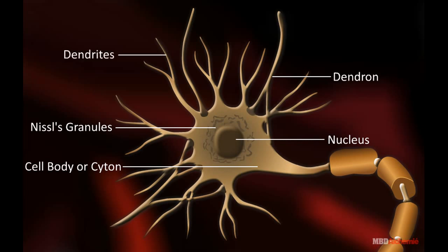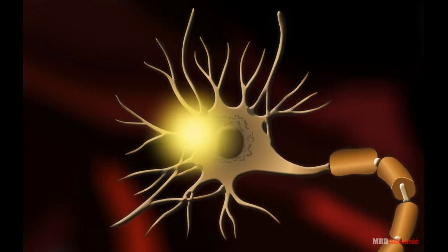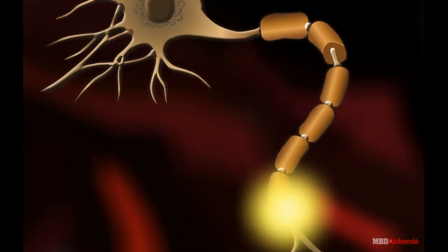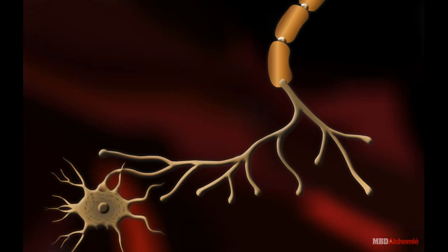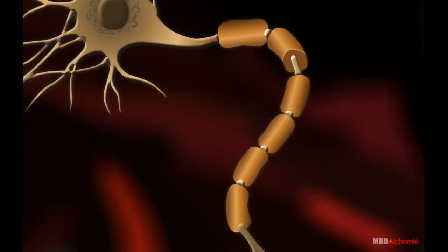Dendrites are terminal branches that arise from dendrons. Axon is single, long and cylindrical. Its primary function is to conduct the nerve impulses away from the cytone. The plasma membrane of neuron is called neurolema.